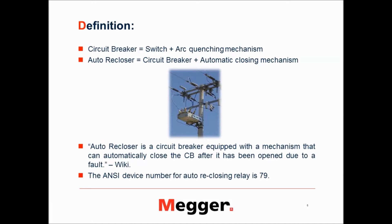The auto-recloser is nothing but a circuit breaker with an automatic closing mechanism. So according to Wikipedia, an auto-recloser is a circuit breaker equipped with a mechanism that can automatically close the circuit breaker after it has been opened due to a fault. Whenever there is a fault, the circuit breaker opens and isolates that part of the circuit, and the auto-reclosing mechanism will automatically close the circuit breaker and restore normal operation of the system. For those of you who don't know, the auto-recloser is represented by the ANSI number 79, so if I say 79, it means the protection function auto-reclose.